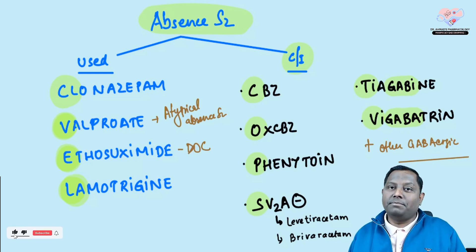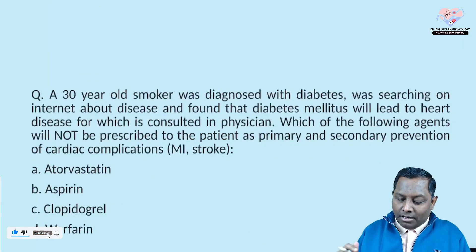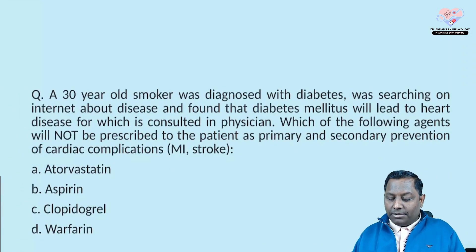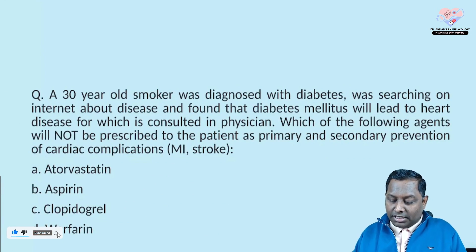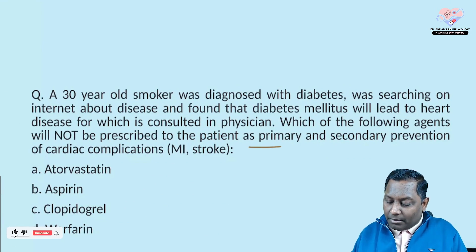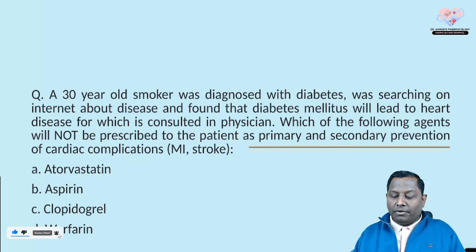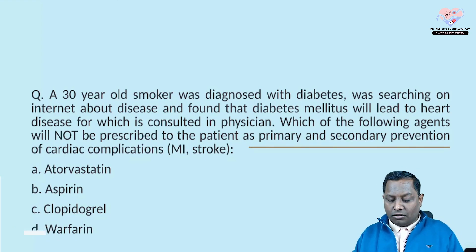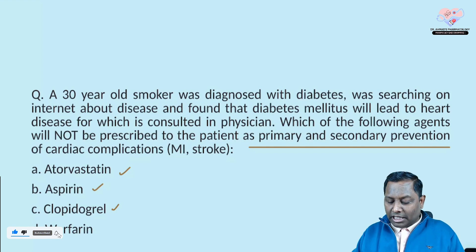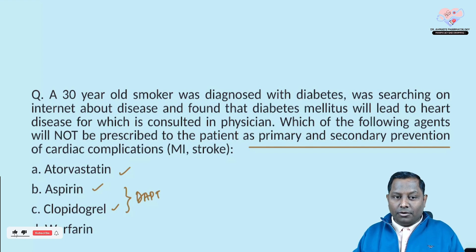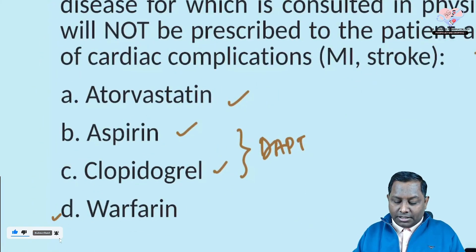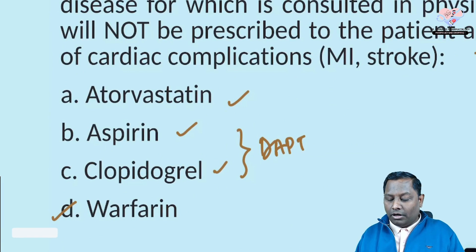Note: levetiracetam is the drug of choice for epilepsy in pregnancy. The last question: a 30-year-old smoker diagnosed with diabetes is concerned about cardiac complications. Which agent would NOT be prescribed for primary and secondary prevention of cardiac complications? For prevention, we use aspirin, statins, and clopidogrel — aspirin and clopidogrel together form dual antiplatelet therapy.